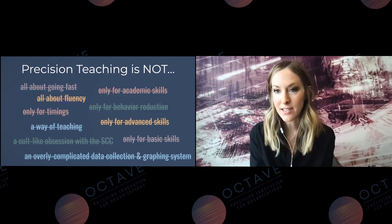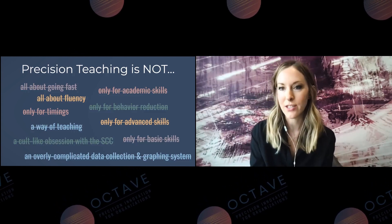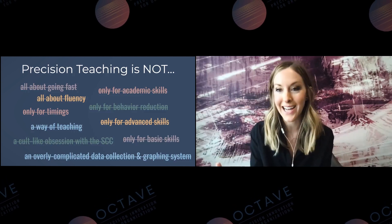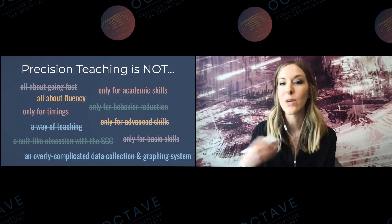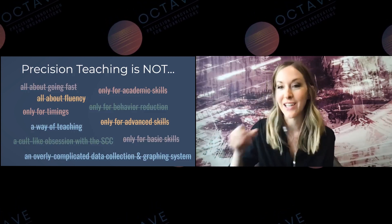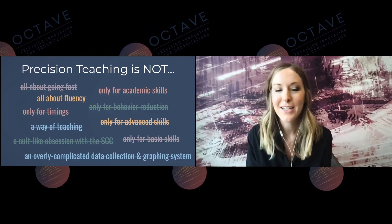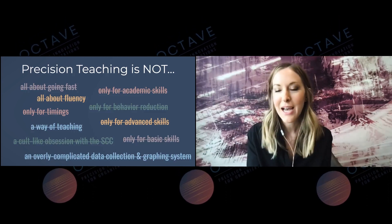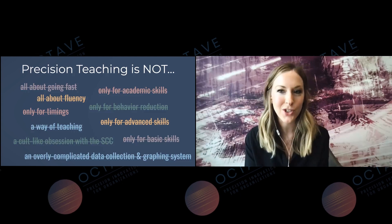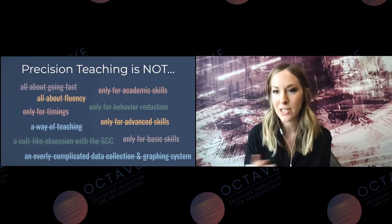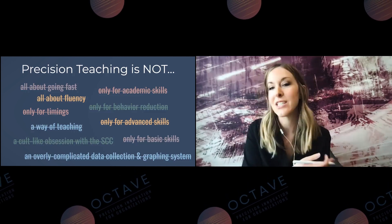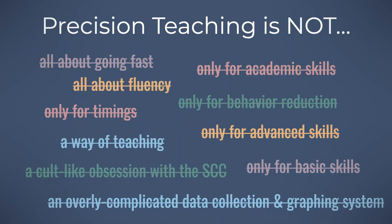One of the reasons we dove into this project is because of some of the things that people are getting wrong about precision teaching. We see an example of learners engaging in responses really quickly and think precision teaching is all about going fast. These are some other things people often think precision teaching is, which I wanted to clarify using the critical features: precision teaching is not all about going fast, it's not all about fluency, it's not only for timings, and it's not a way of teaching.